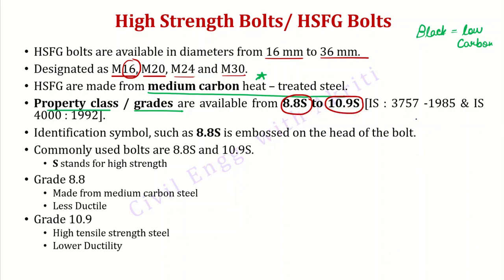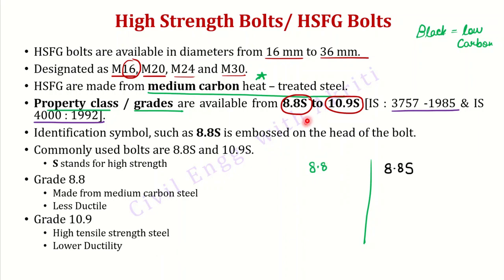The suffix 'S' in the grade designation stands for high strength. This distinguishes HSFG bolts from ordinary bolts. For example, 8.8 refers to ordinary bolts and 8.8S refers to HSFG bolts — both types of bolts are available, so the 'S' suffix is used to differentiate them. Commonly used grades are 8.8S and 10.9S.